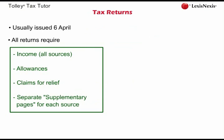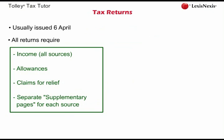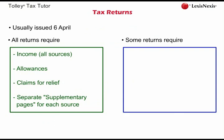Once the taxpayer has completed the tax return, he will sign a declaration to say that, to the best of his knowledge and belief, the return is correct and complete. If the tax return turns out not to be correct and complete — i.e. there are errors or omissions — HMRC have powers to charge penalties for incorrect returns. Whereas all income tax returns require details of taxpayers' income and allowances, only some returns require the taxpayer to make a self-assessment.